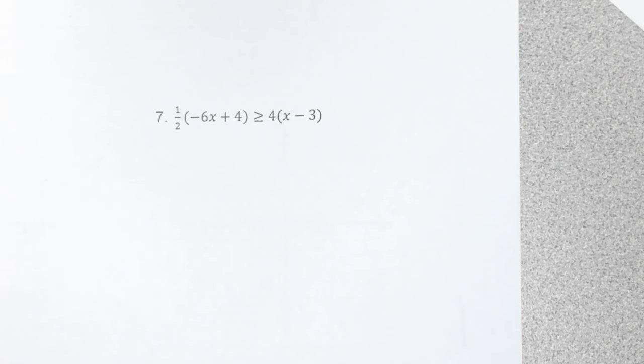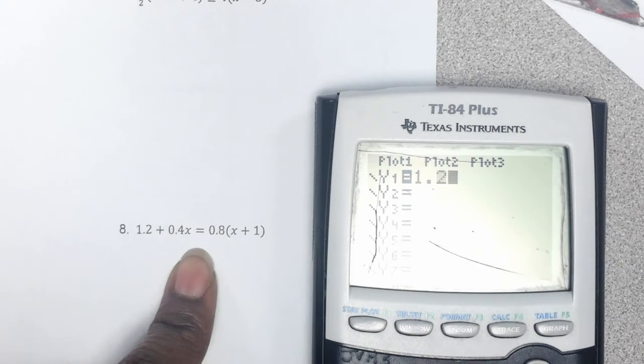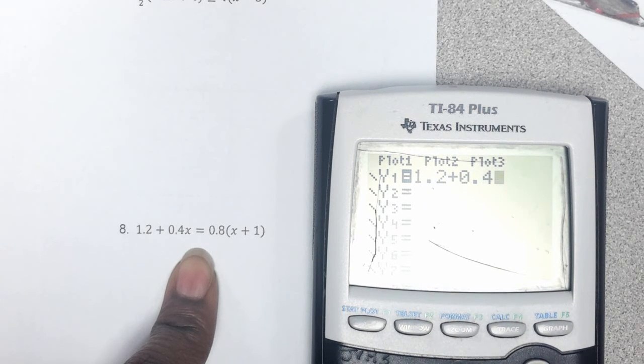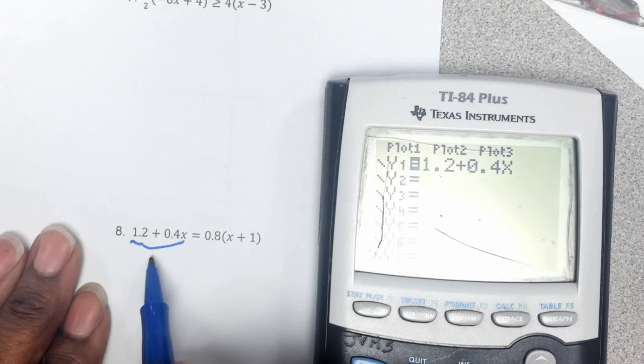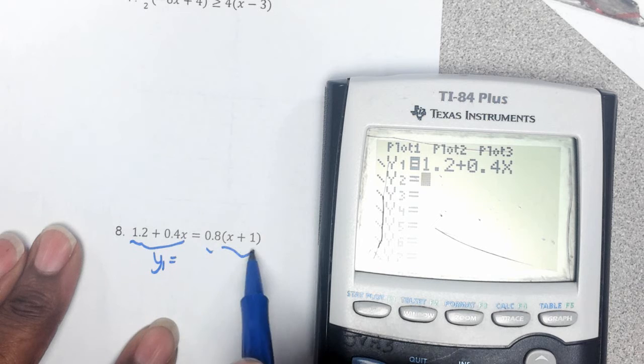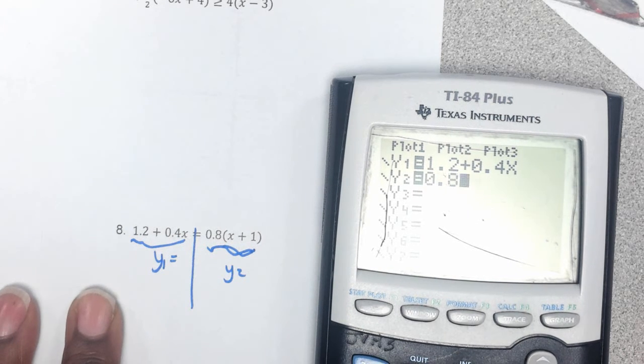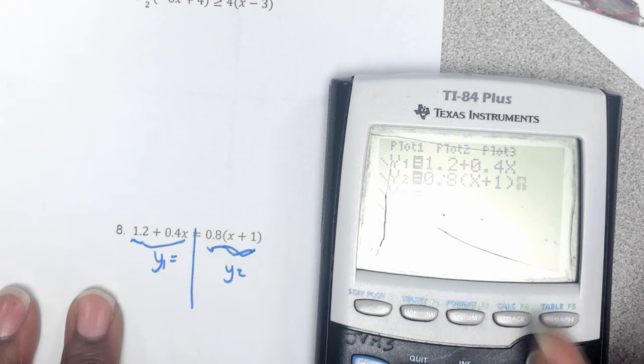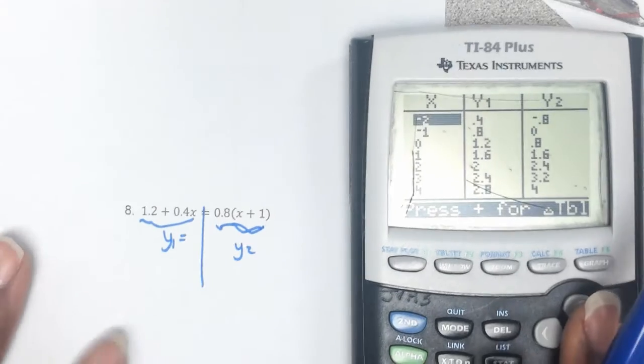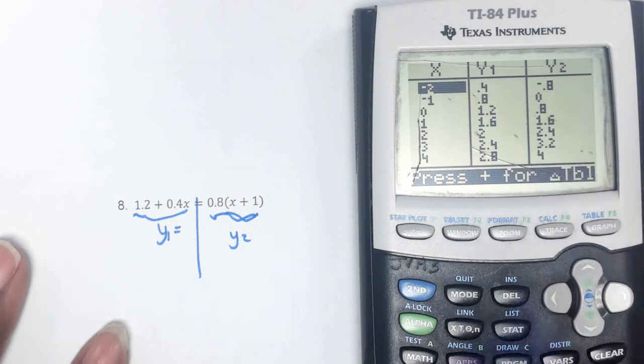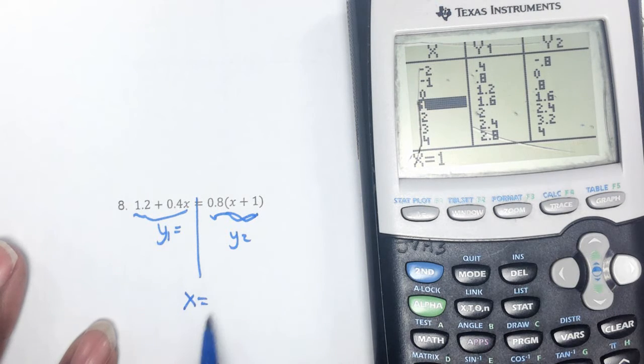Okay, yeah, I think this one is going to work out. So I have put, hopefully, you have put the 1.2 plus 0.4x in there and the y1, if you need to see that again. That goes in the y1. This side goes in the y2. 0.8, parentheses, x plus 1. Press second graph. Remember, we're looking for when these two are, when the y1 and y2 are equal, we found our x solution, you see it, which is 1. Okay.